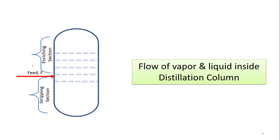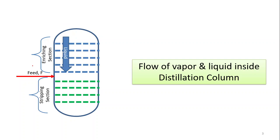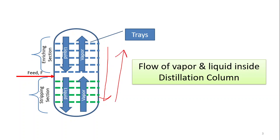We have trays inside the column — some in the enriching section and some in the stripping section. All liquids inside the column flow from the top to the bottom in both the enriching and stripping sections. As far as vapor flow is concerned, vapor flows from the bottom to the top. This is the flow of vapor in both the enriching and stripping sections. So overall, liquid flows from top to bottom and vapor flows from bottom to top.